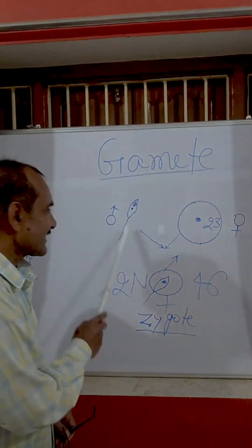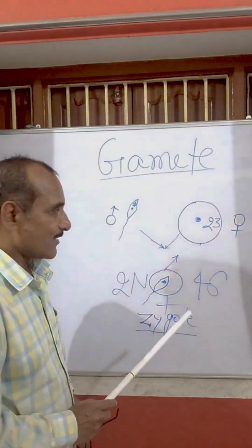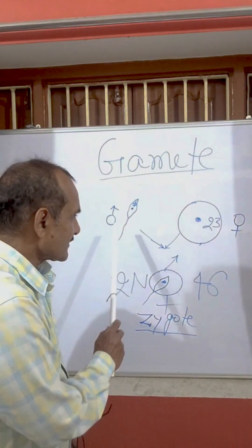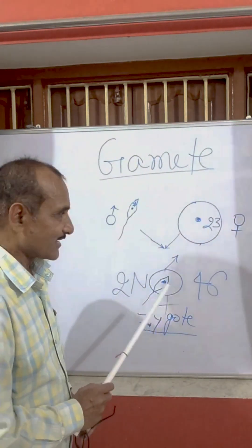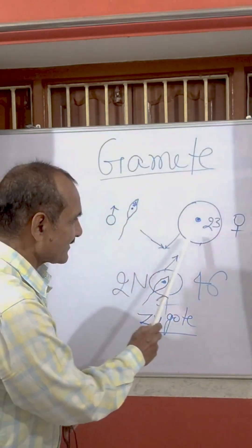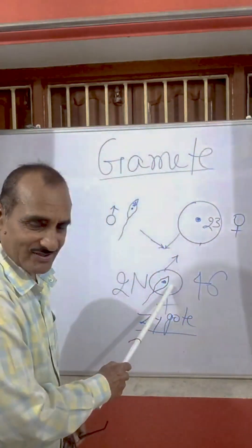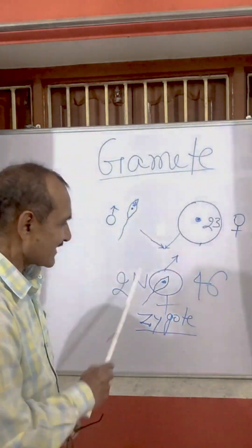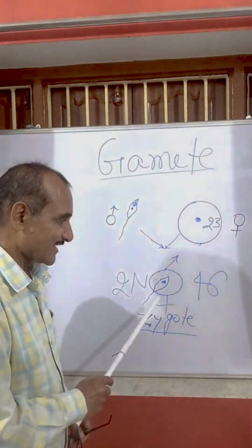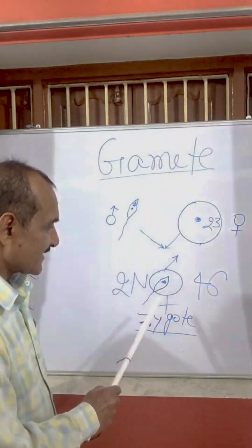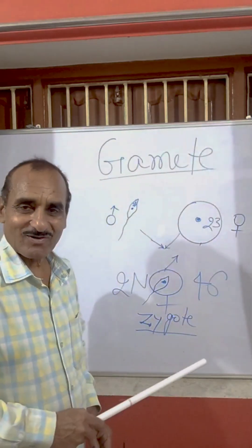This is the male gamete, the sperm, and this is the female gamete, the ovum. There are 23 chromosomes here and 23 chromosomes here. After fusion of the male gamete and the female gamete, a zygote is formed — a 2n structure, meaning 46 chromosomes are present. This microscopic cellular structure is called a zygote.